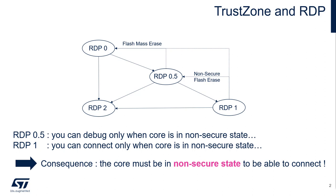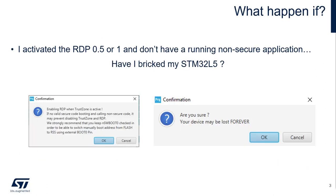So the consequence is: if you want to connect in RDP 0.5 or 1, you must ensure that your core is executing a non-secure application. So what happens if I don't have any application on my target, or it has been erased by error? Have I broken my device?